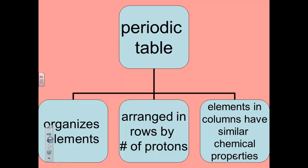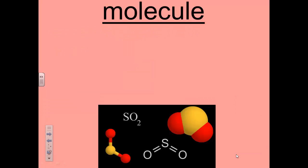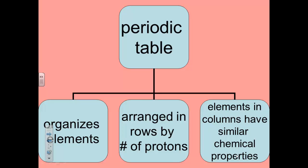Therefore, you can predict the properties of an element if you know its column. For example, in the last column on the right, you will find elements known as noble gases. They do not often combine with other elements. Every element has a symbol of one, two, or three letters. Only the first letter of the symbol is capitalized.